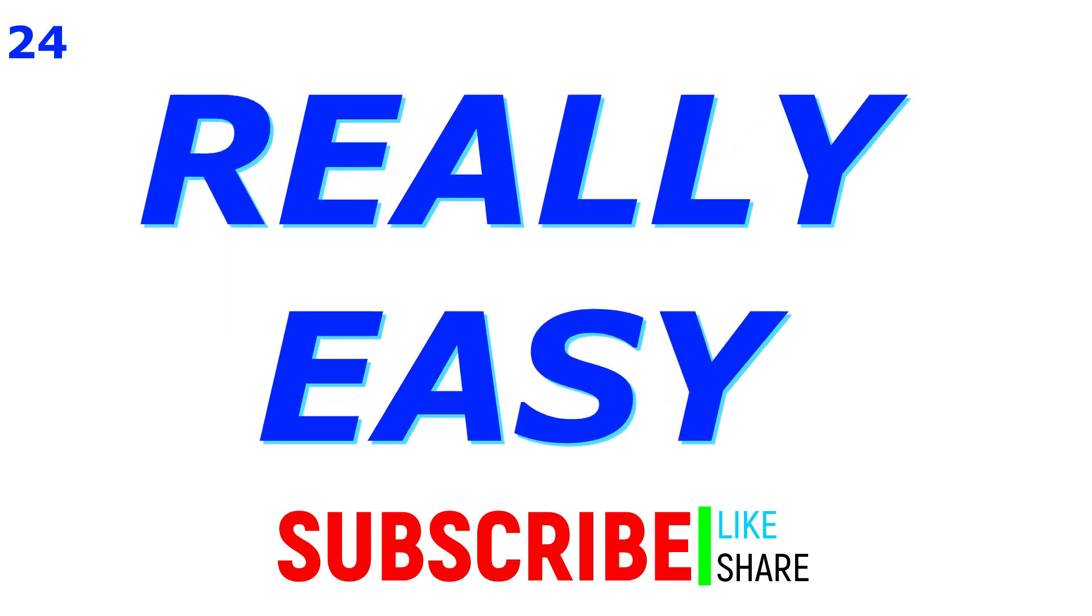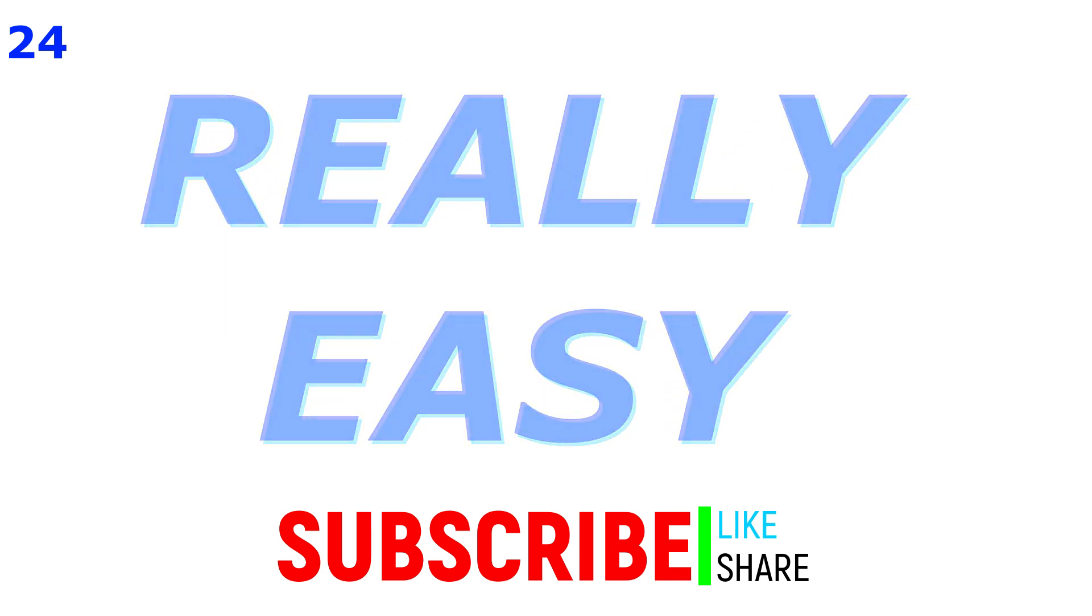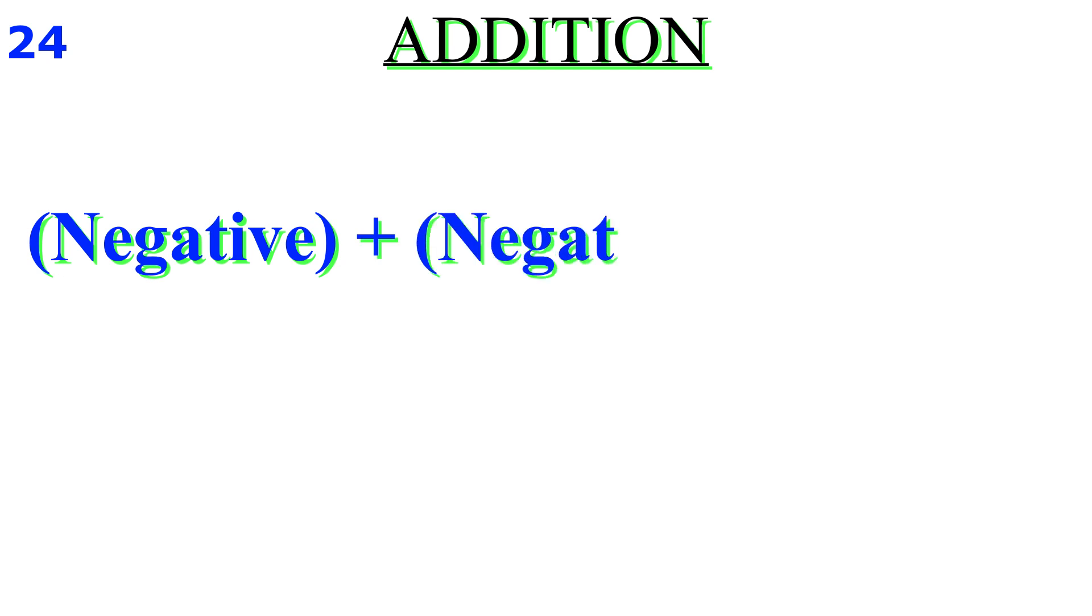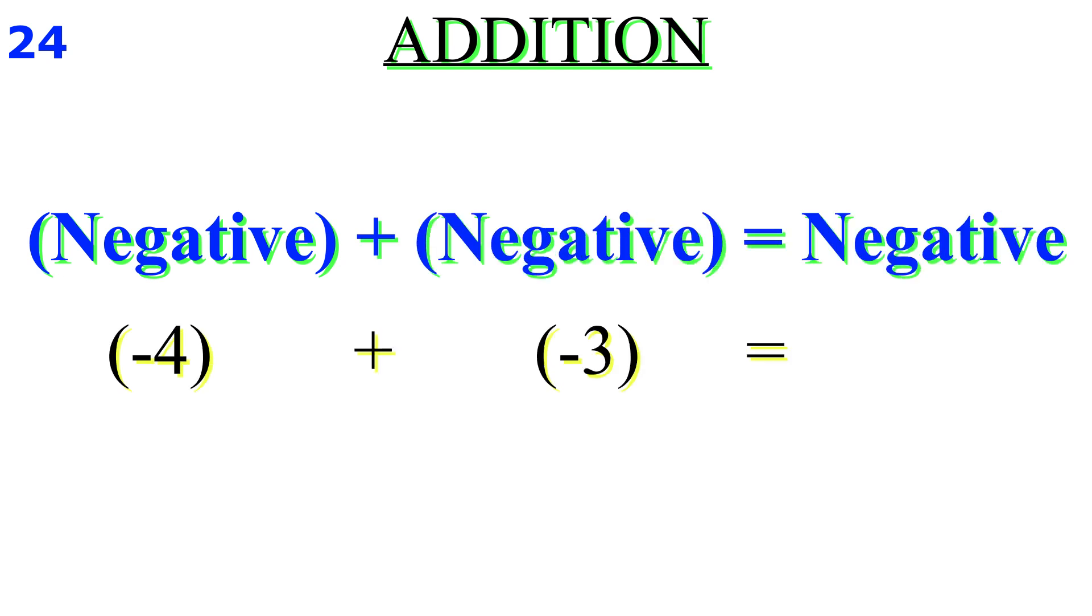My dear little friend, if you get any value from this video, consider liking it and subscribe to the channel to show your support. Friend, if adding two negative numbers, the sum will always be a negative number. Minus 4 plus minus 3 equals minus 7. The negative symbol needs to be added to the sum.